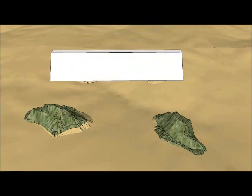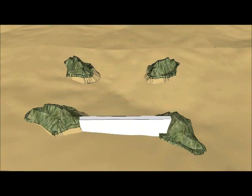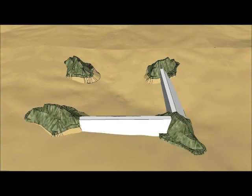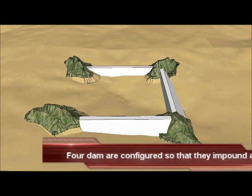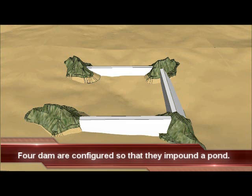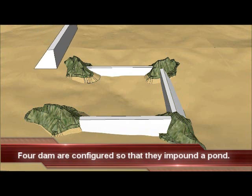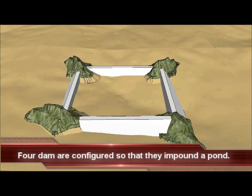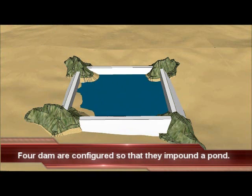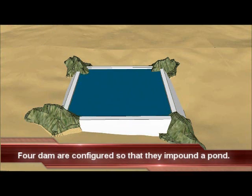Instead of a river valley, imagine a hilly area where one would want to create a pond. To do this, in effect, dams would be created between the hills, and these dams would impound water to create a pond.